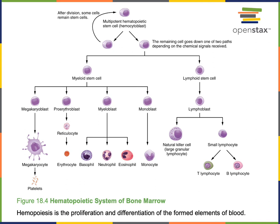This illustration shows the process of hematopoiesis, where the hemocytoblast divides to produce multipotent stem cells capable of differentiating into any of the formed elements. The hemocytoblast can differentiate to form the myeloid stem cell or the lymphoid stem cell. The myeloid stem cell forms the majority of formed elements — all formed elements that are not lymphocytes or natural killer cells. The lymphoid stem cell differentiates to form lymphocytes, including T lymphocytes responsible for cell-mediated immunity, producing effector cytotoxic T cells, and B lymphocytes responsible for antibody-mediated adaptive immunity, where effector B lymphocytes are plasma cells that secrete antibodies.